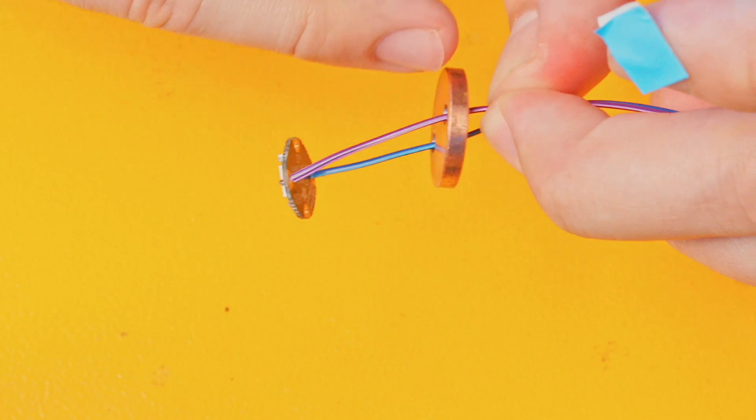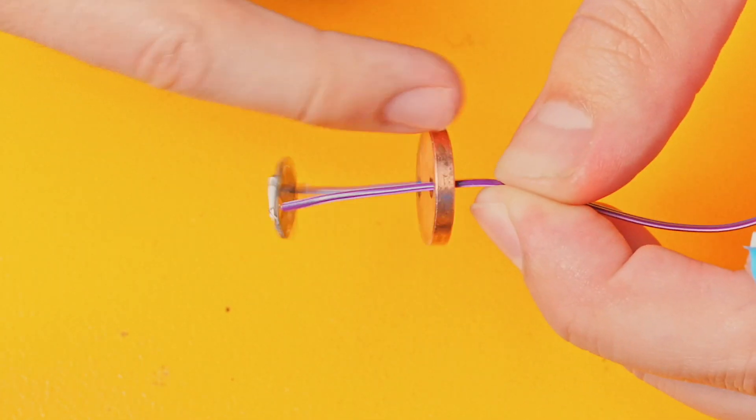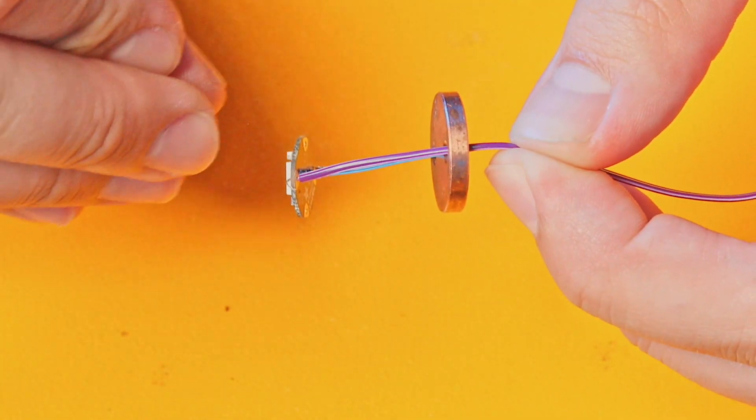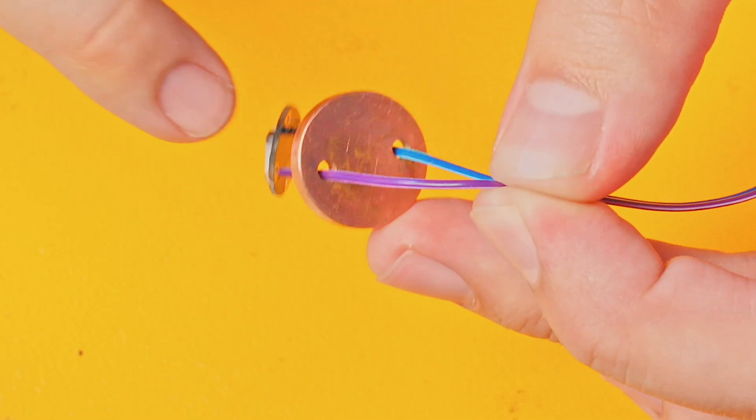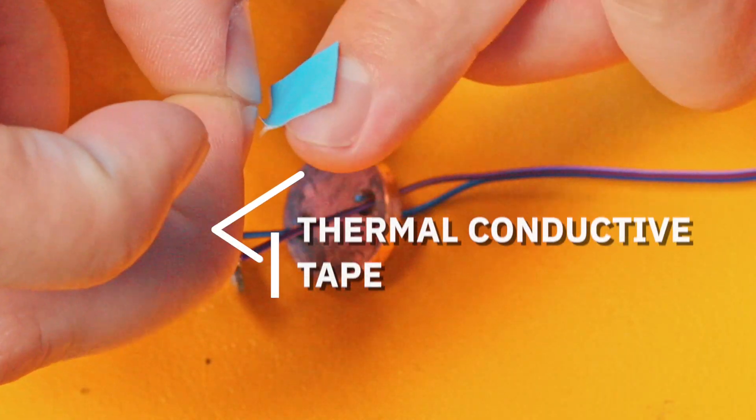We want the heat from the LED to dissipate into this heat sink. That's what this is for, that's the entire purpose of this: to spread out the heat away from the LED to extend the lifespan of that LED.